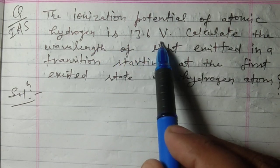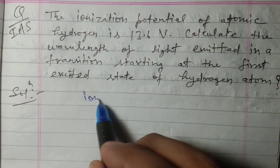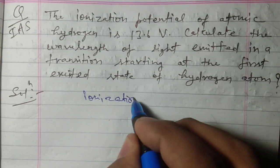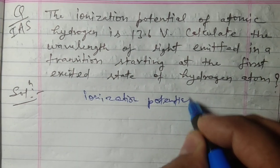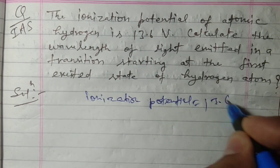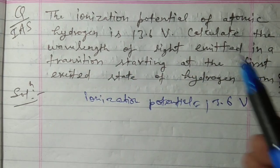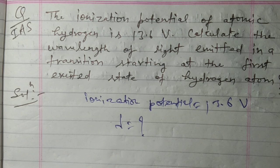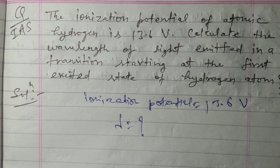is 13.6 volt. So this is the ionization potential equal to 13.6 volt. We have to calculate the wavelength of the light emitted in a transition starting at the first excited state of the hydrogen atom.